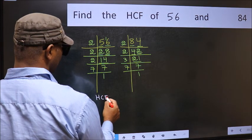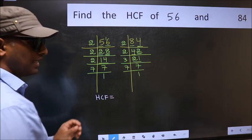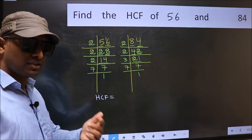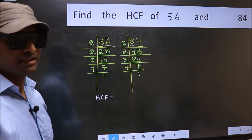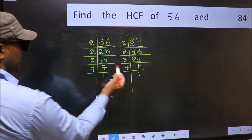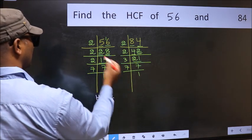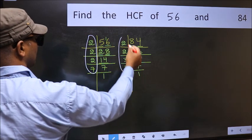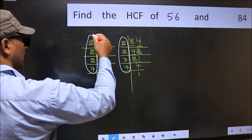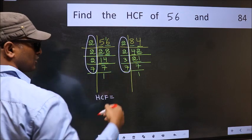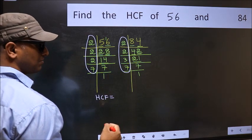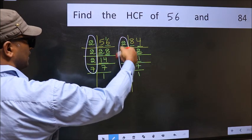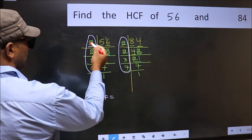Therefore, our HCF is the product of the numbers which should be present in these two places. That is here and also here. Here and here. So now let us find the numbers which should be present here and here, starting with the number 2.